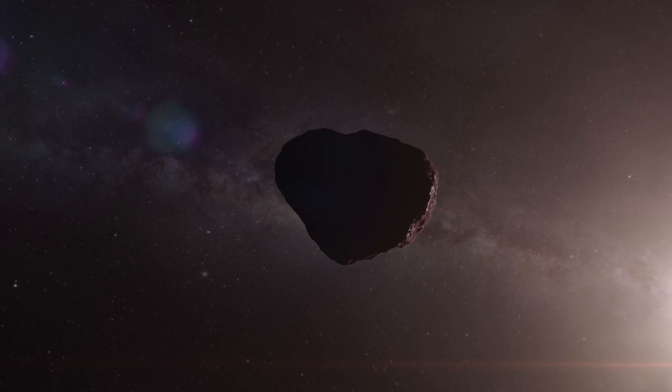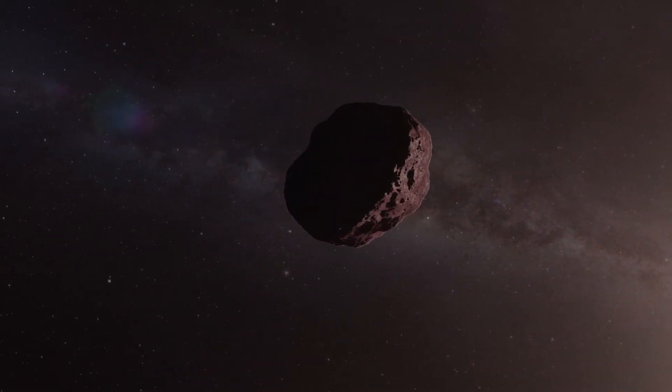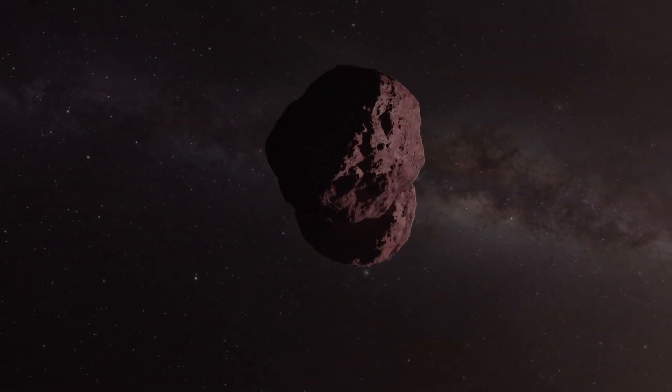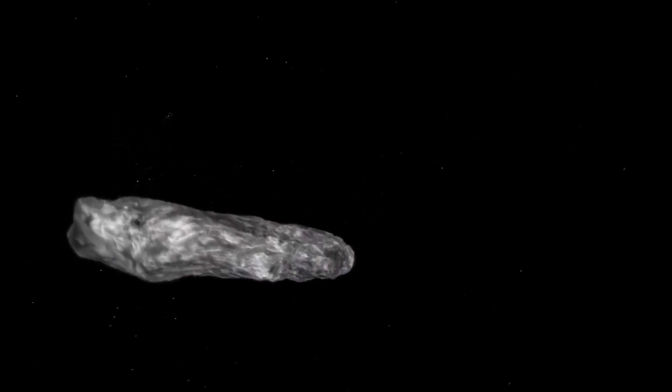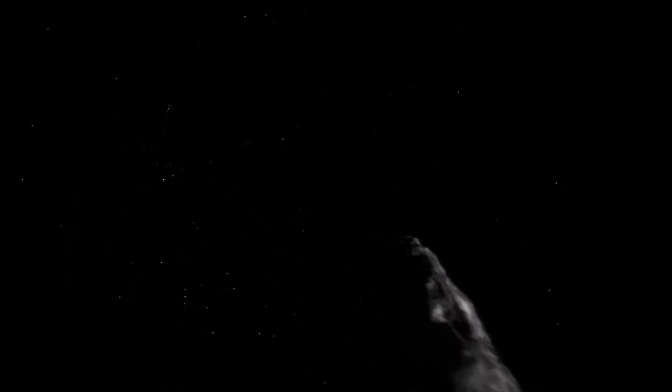Before it arrived, no object from outside our local system had ever come this close. This visitor was incredibly fast and didn't follow the sun's gravity. Scientists found it fascinating because it looked like an asteroid but acted like a comet. Described as having a cigar-shaped form, Oumuamua had a length ten times greater than its width, making it an incredibly unusual space object.